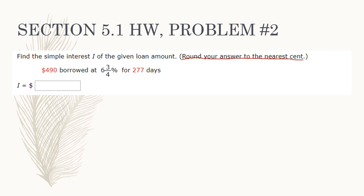We already know the formula for simple interest: I equals P times R times T. We need to identify P, R, and T. P is simple — it's the original amount borrowed, which is $490. Next we need to identify our interest rate. We have six and three-quarters percent interest, which is more complicated than the last example, so it's very important that you always convert percentages to decimals first.